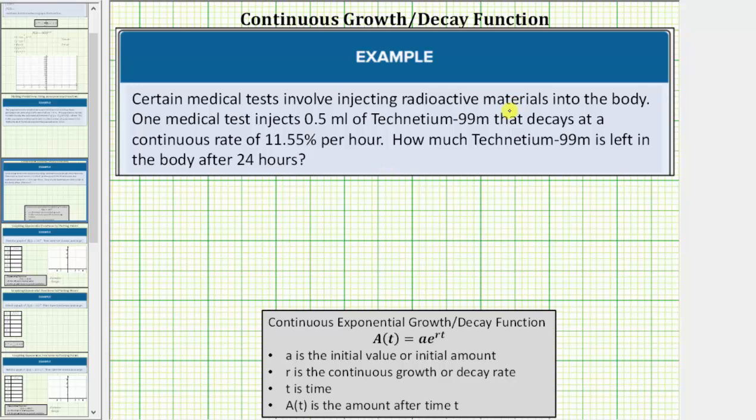We will be modeling the decay of the radioactive material using the exponential function in the form A(t) = ae^(rt), where a equals the initial value or initial amount, r is the continuous growth or decay rate expressed as a decimal. If we have a growth rate, r is positive. If we have a decay rate, r is negative. t is the time, and A(t) is the amount after time t.